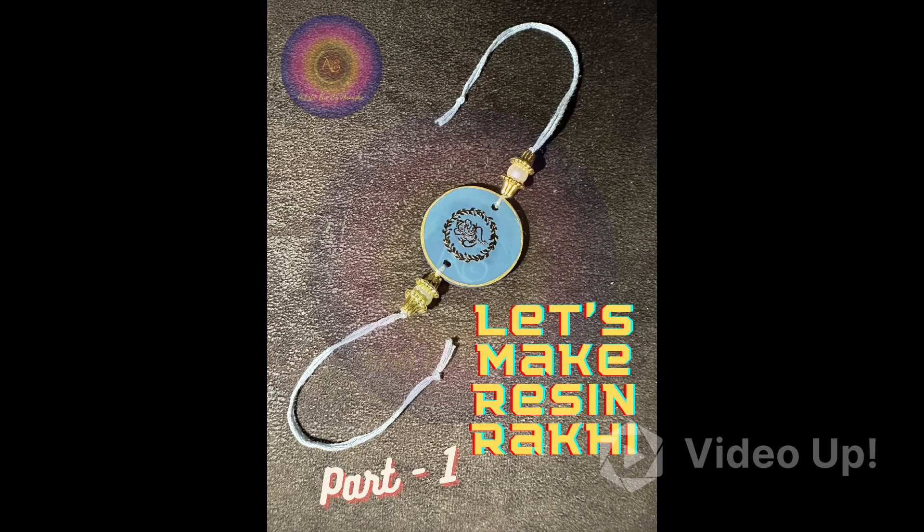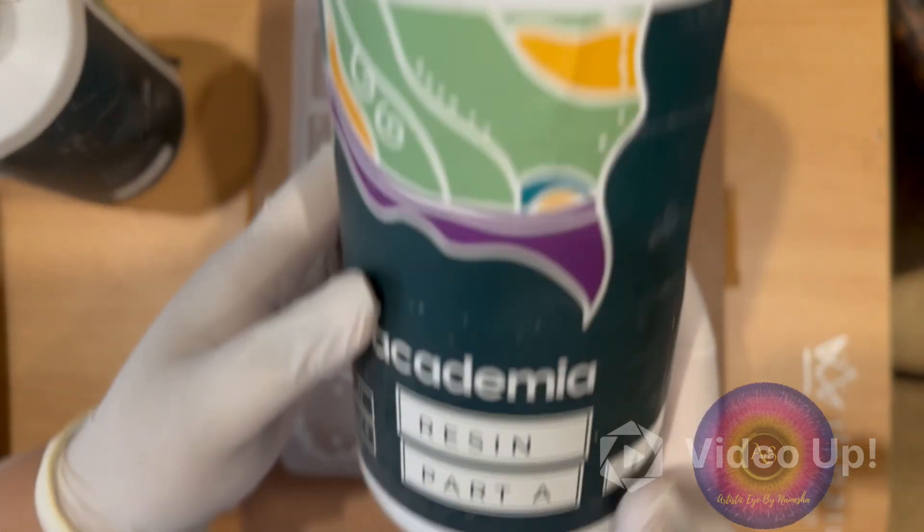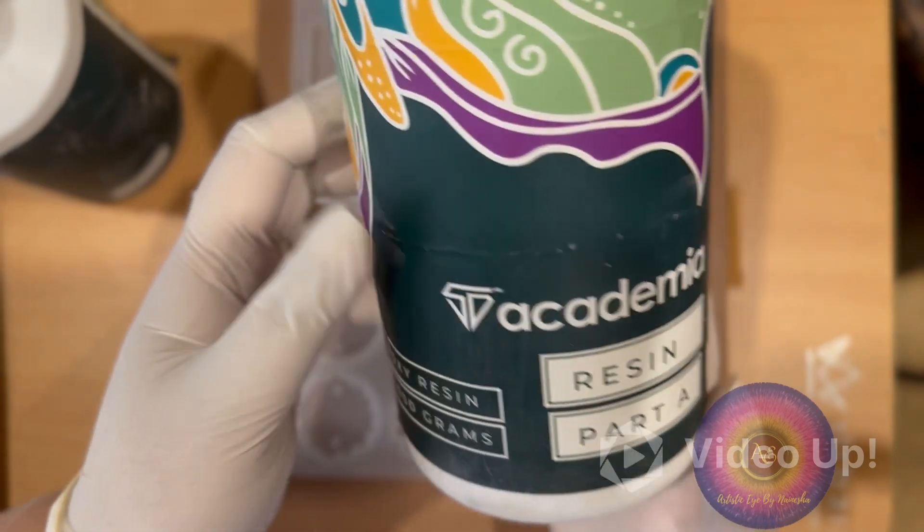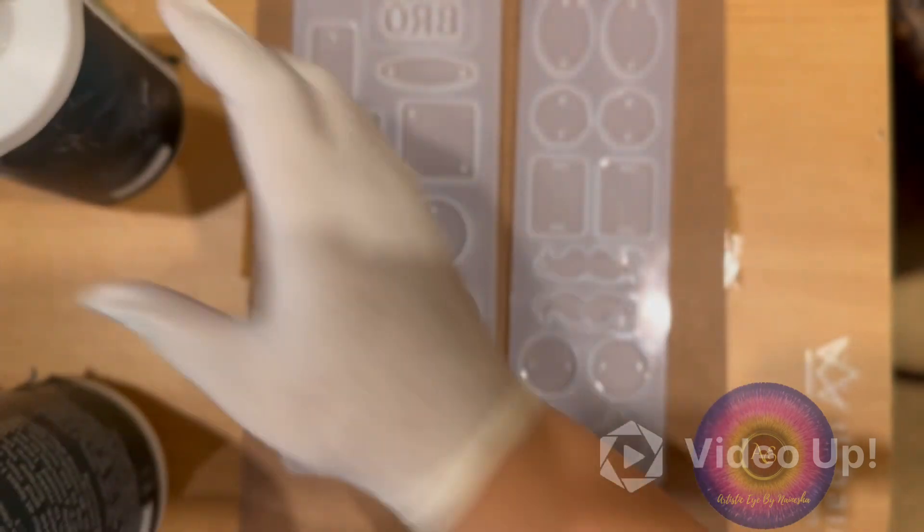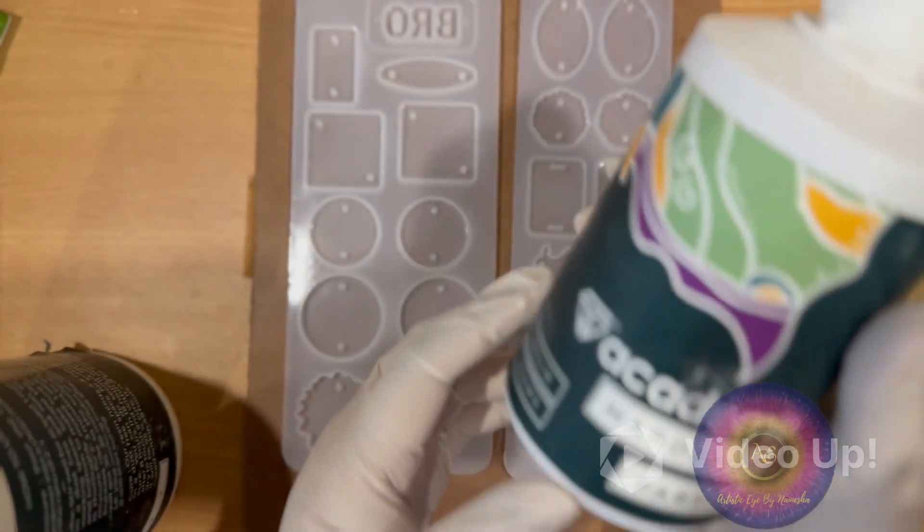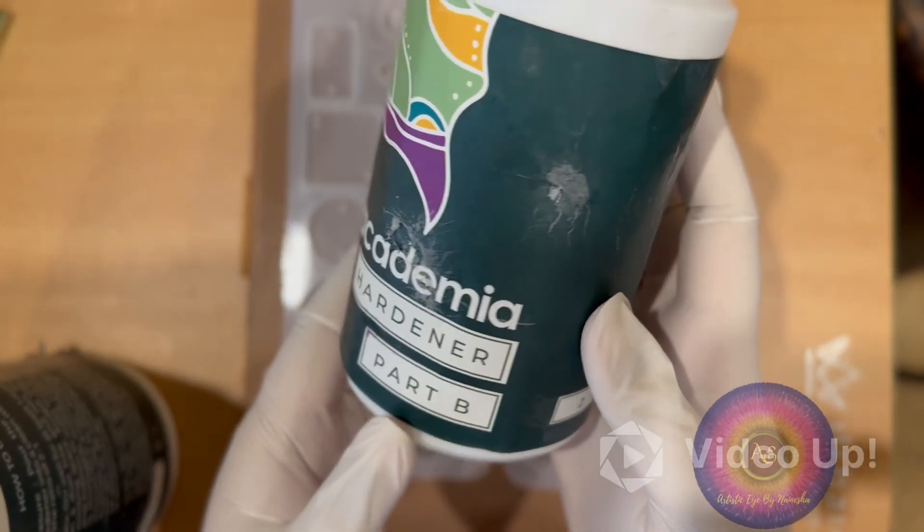Hey guys, let's make rakhi today. I'm going to make rakhi using SD Academia's two-is-to-one resin. Because of the weather, I'm using two-is-to-one resin instead of three-is-to-one for casting, but it works fine.